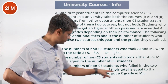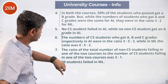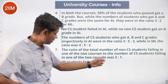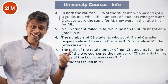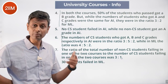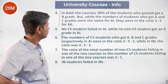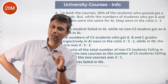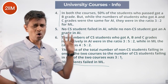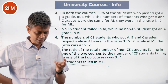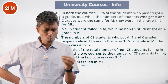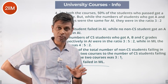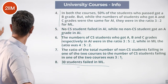Since no CS student failed in AI, all CS failures are in ML. So this 3:1 ratio is entirely in ML. Then we get the key fact: 30 students failed in ML. I think there will be variables X, Y, Z, K to start, and with every constraint one variable will disappear until we plug in 30 and get full numbers.